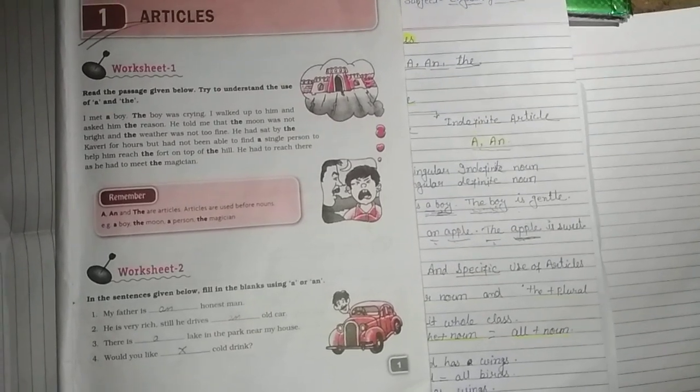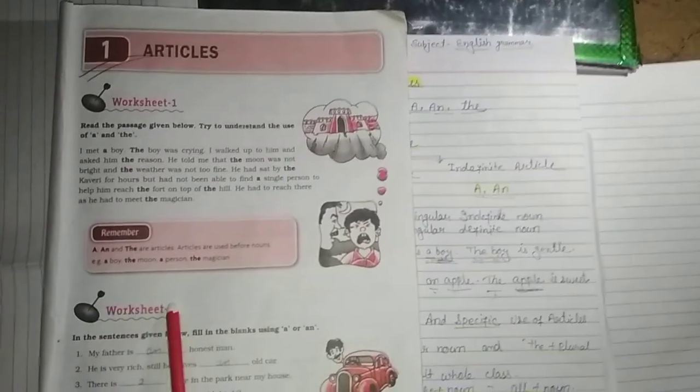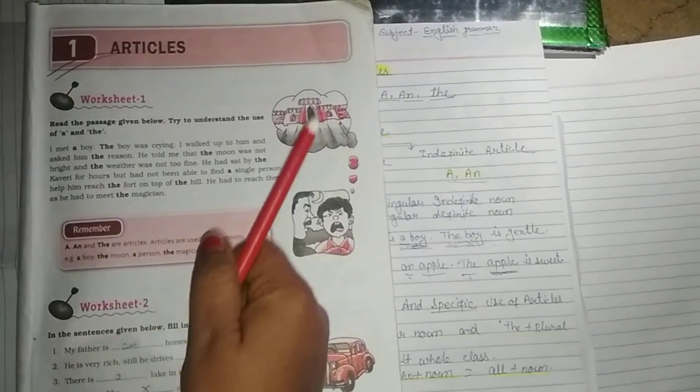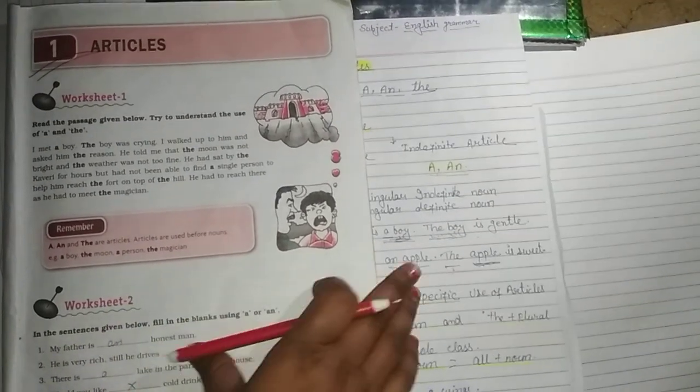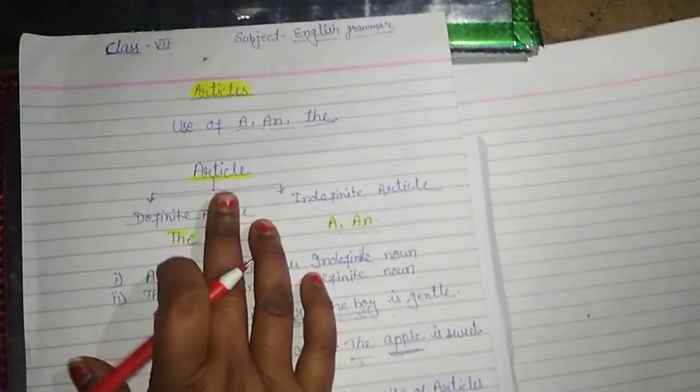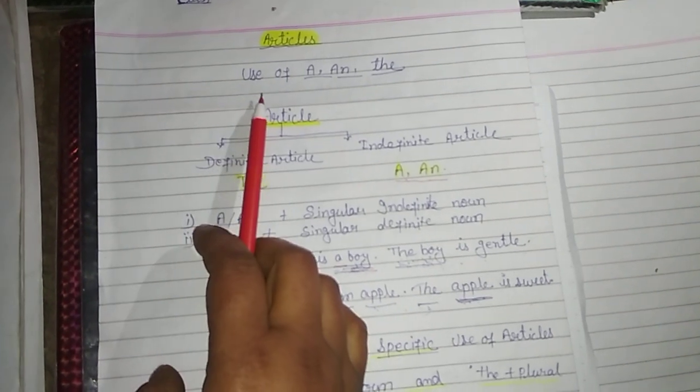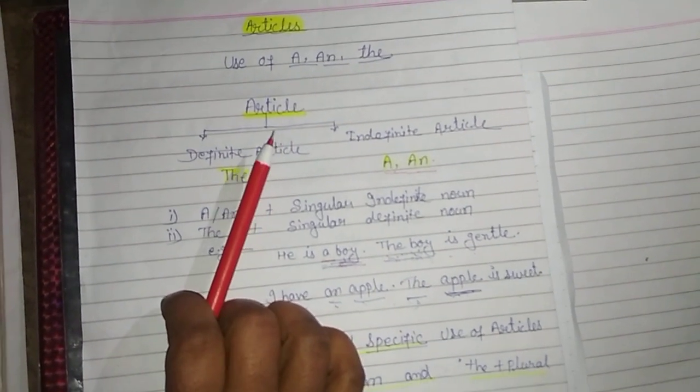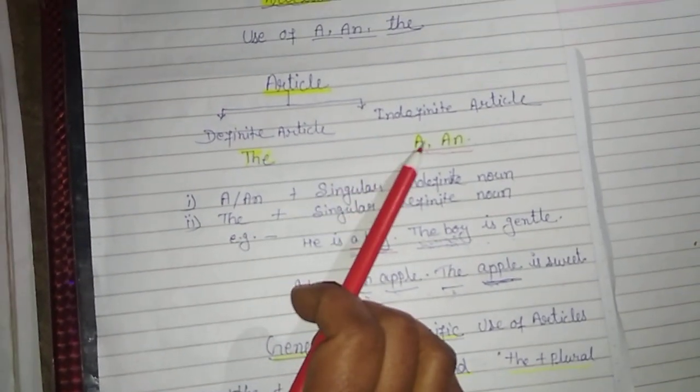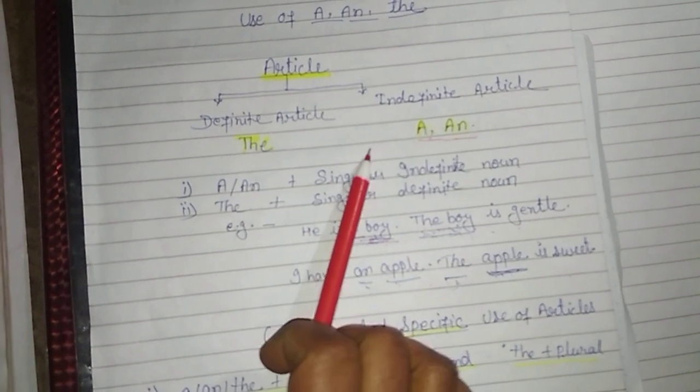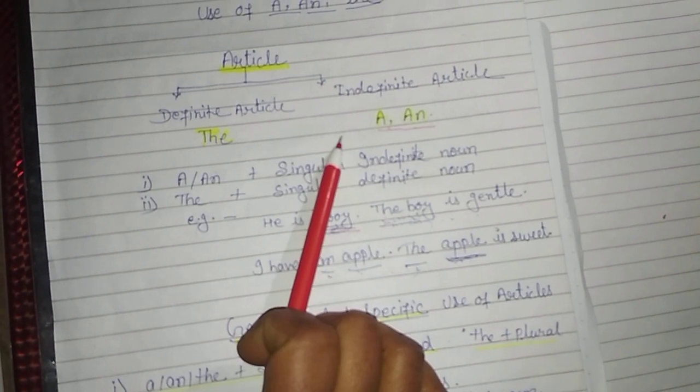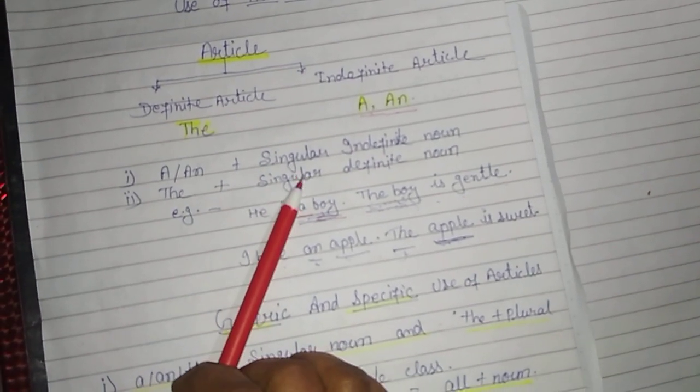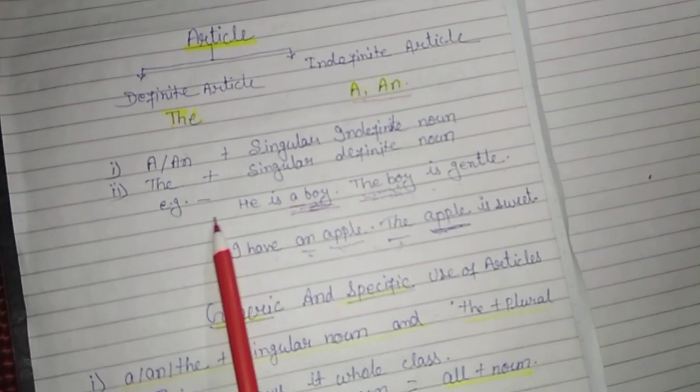Here you can see it is your first chapter for class seven, and you have to learn about articles. There are two types of articles: definite article and indefinite article. Definite article is 'the' and indefinite articles are 'a' and 'an'. How we can use them? I will tell you: a or an plus singular indefinite noun, and the plus singular definite noun. For example, I have given 'He is a boy' and 'The boy is gentle.'